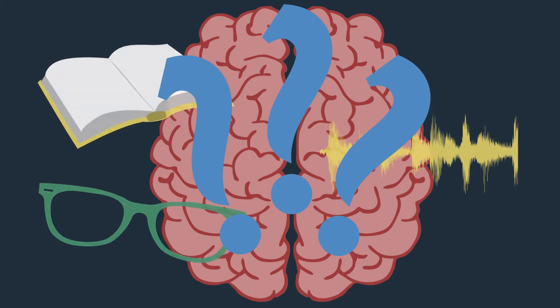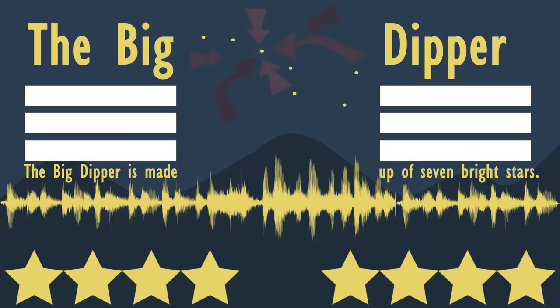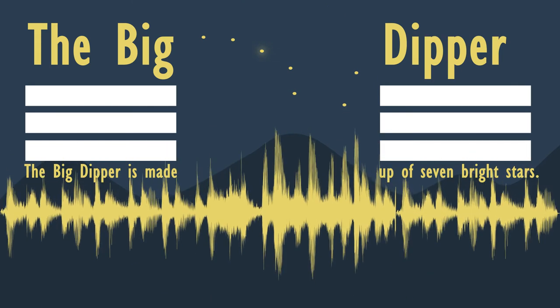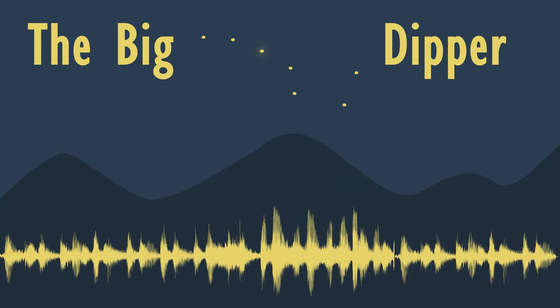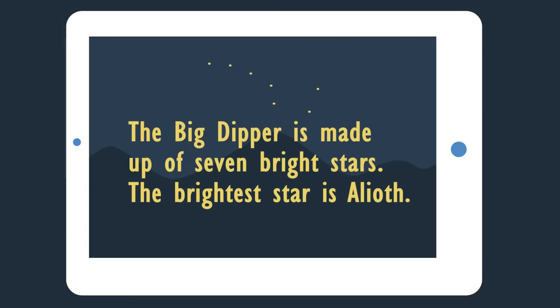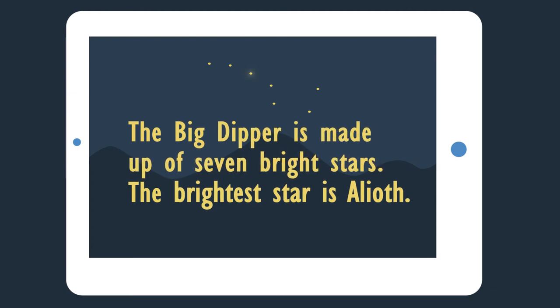Let's dial it back a little and see what makes for good e-learning and what goes too far. The redundancy principle teaches us to eliminate redundant information in any format. This includes deleting on-screen text when you have narration that's reading those words. In our animation of the Big Dipper in the night sky, we'd get rid of the on-screen text that says, 'The Big Dipper is made up of seven bright stars,' and 'The brightest star in the Big Dipper is Alioth.'